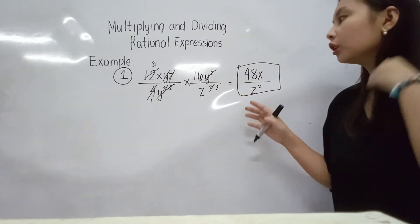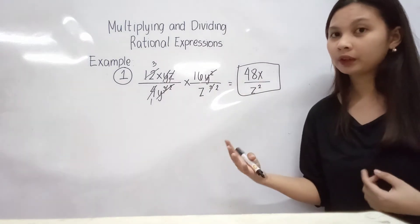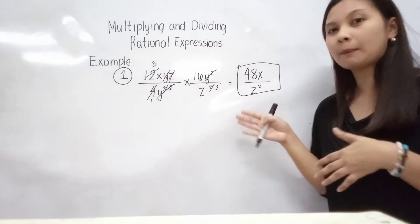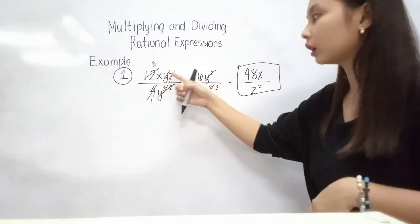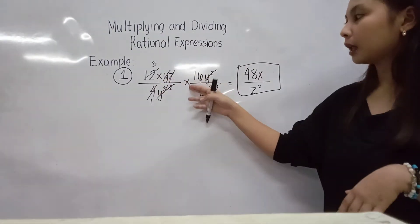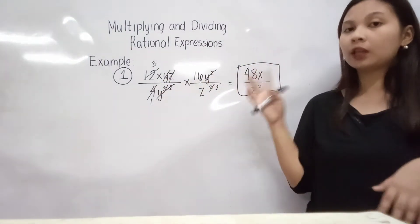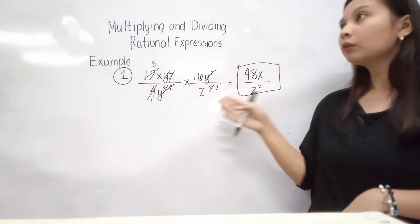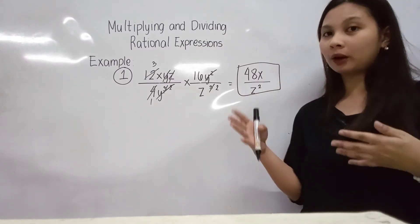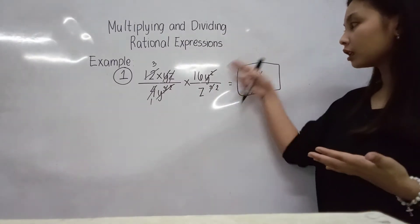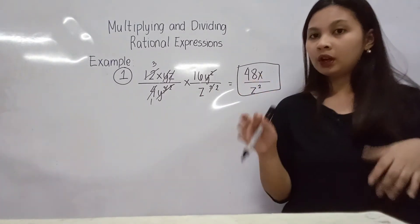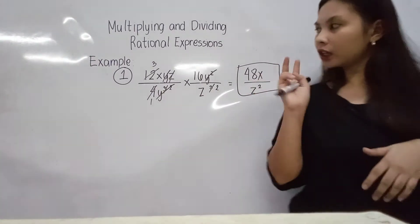So pwede nyo naman hindi kayo mag-cancel out katulad ng ginawa ko. Kung nahihirapan kayo mag-cancel out, or kung i-determine kung sino dapat i-cancel out, pwede nyo naman silang i-diretso na. Pwede nyo silang i-multiply ng dere-diretso. Pero sa dulo kasi naman, magsisimplify pa rin naman kayo. Kailangan nyo pa rin talagang mag-cancel out. So ito kasi, sinimplify ko na lahat dito para yung answer simplify na, hindi ko na kailangan ng lowest term.